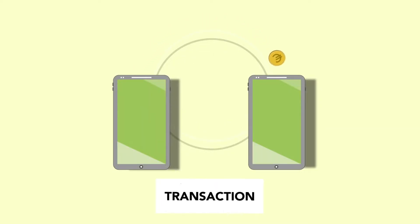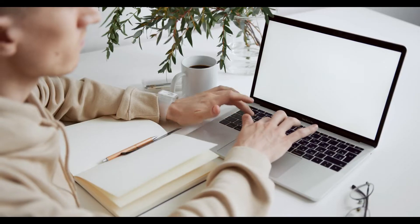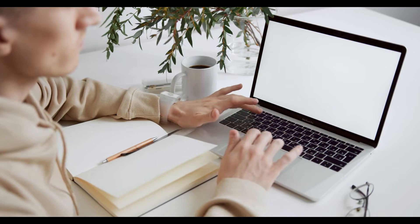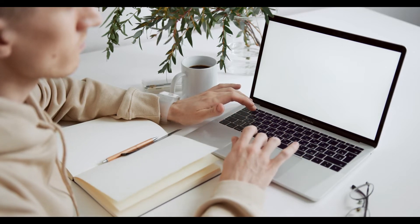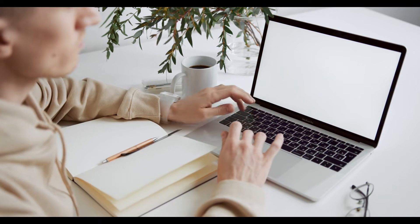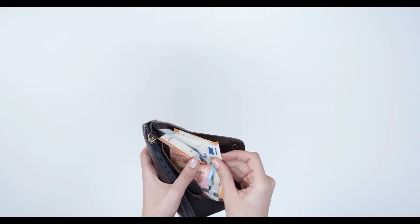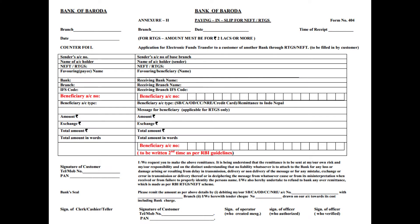For sending funds through NEFT or RTGS, nowadays due to online transfer facilities, we can credit the payee's account at a different bank within a few minutes. If you wish to transfer funds to your friend's account via NEFT at a different bank, instead of a pay-in slip, you need to provide NEFT details or fill an NEFT form with all the account details of the payee. Your banker then debits your account and sends the money through NEFT to your friend's account as per the details mentioned in the NEFT form.